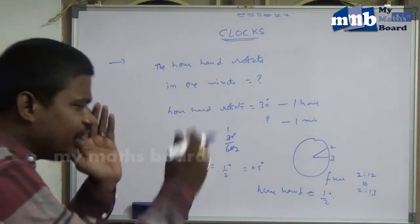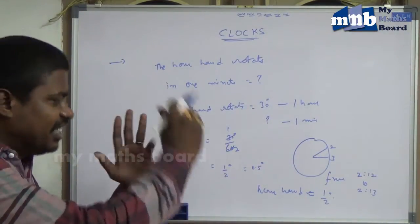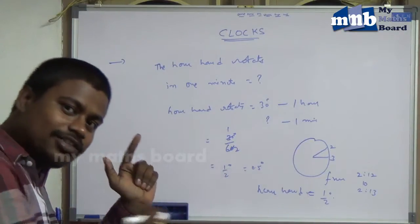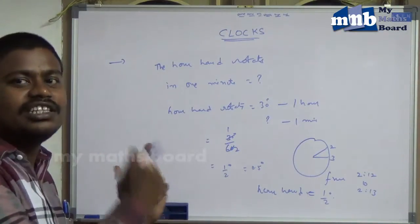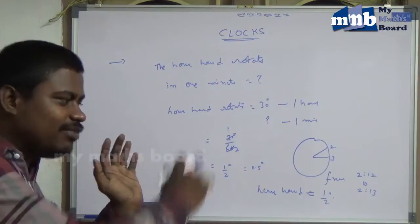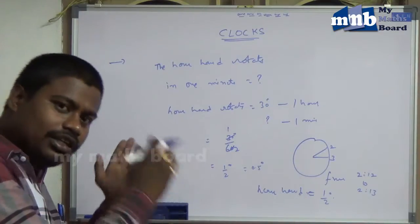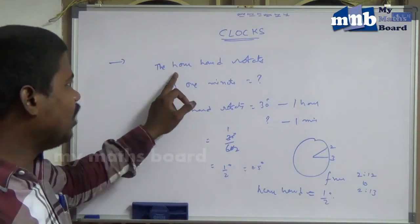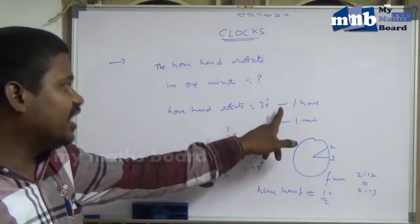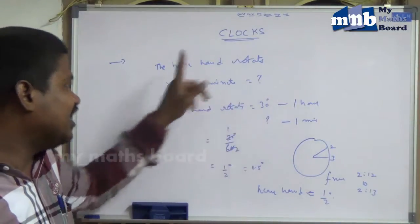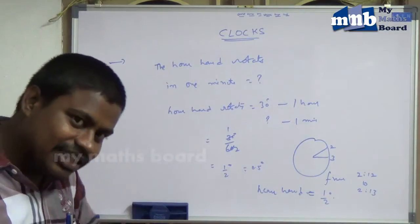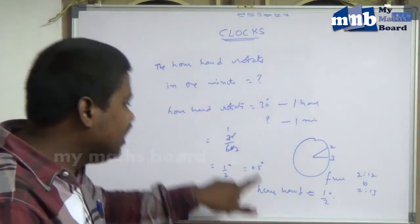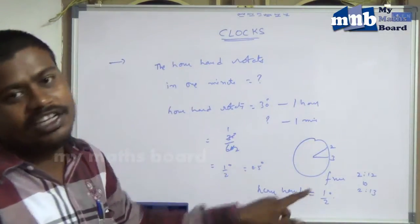The time is going on. Simultaneously, the second hand rotates, the hour hand rotates, and the minute hand also rotates. All three hands are rotating as time goes on. To recap: in one hour, the hour hand rotates 30 degrees, and in one minute, the hour hand rotates half a degree.